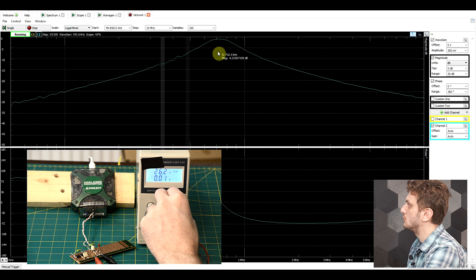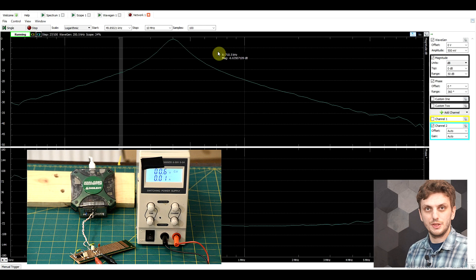And now if I remove the bias again, so we go down to zero, we will see the exact same phenomenon but the other way. So we can see how the resonance frequency is now decreasing.